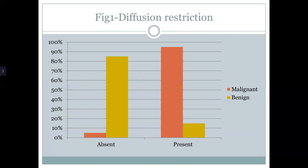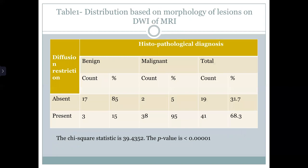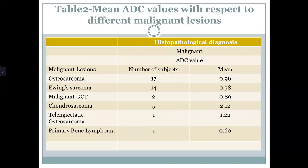This figure shows the diffusion restriction percentage of the malignant and benign lesions. This table shows the distribution based on morphology. This table shows the mean ADC values with respect to malignant lesions. Osteosarcoma was the most common tumor seen in malignant cases and had the least ADC value.